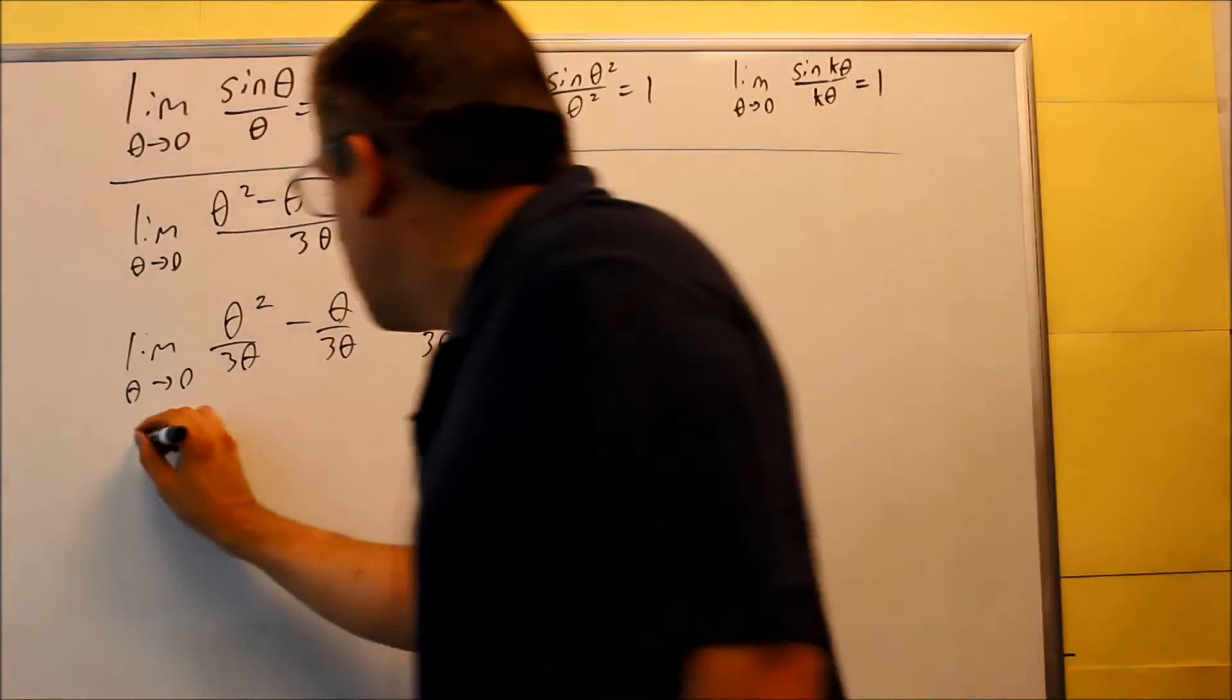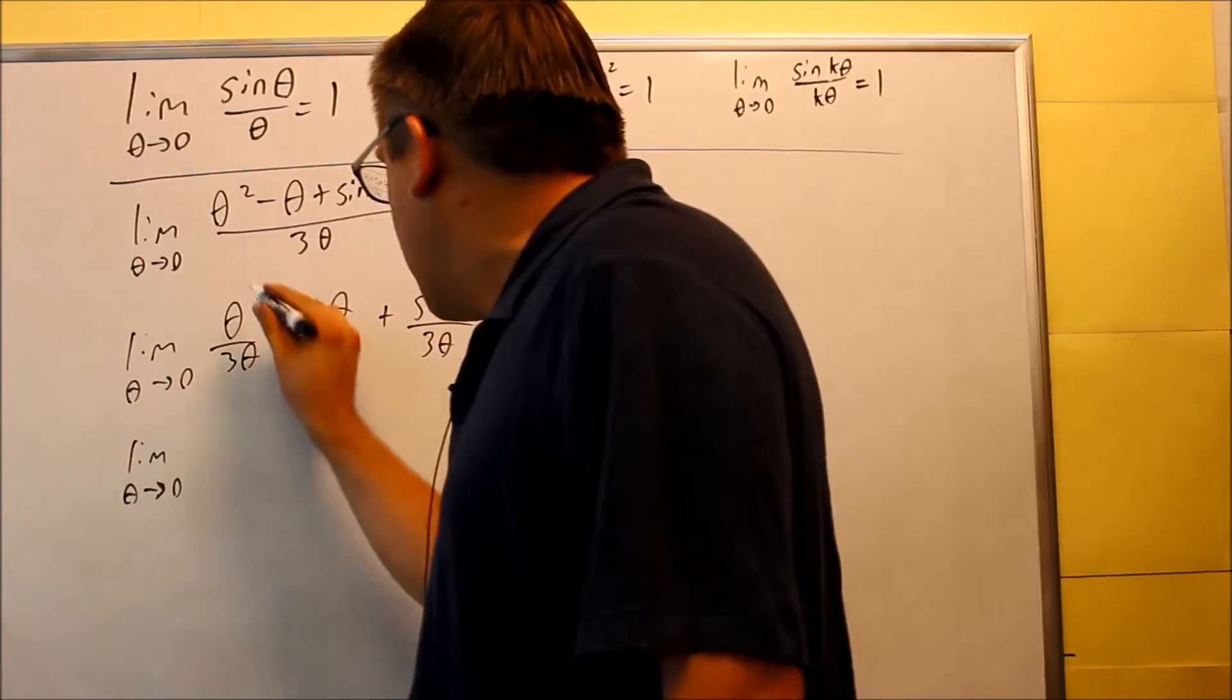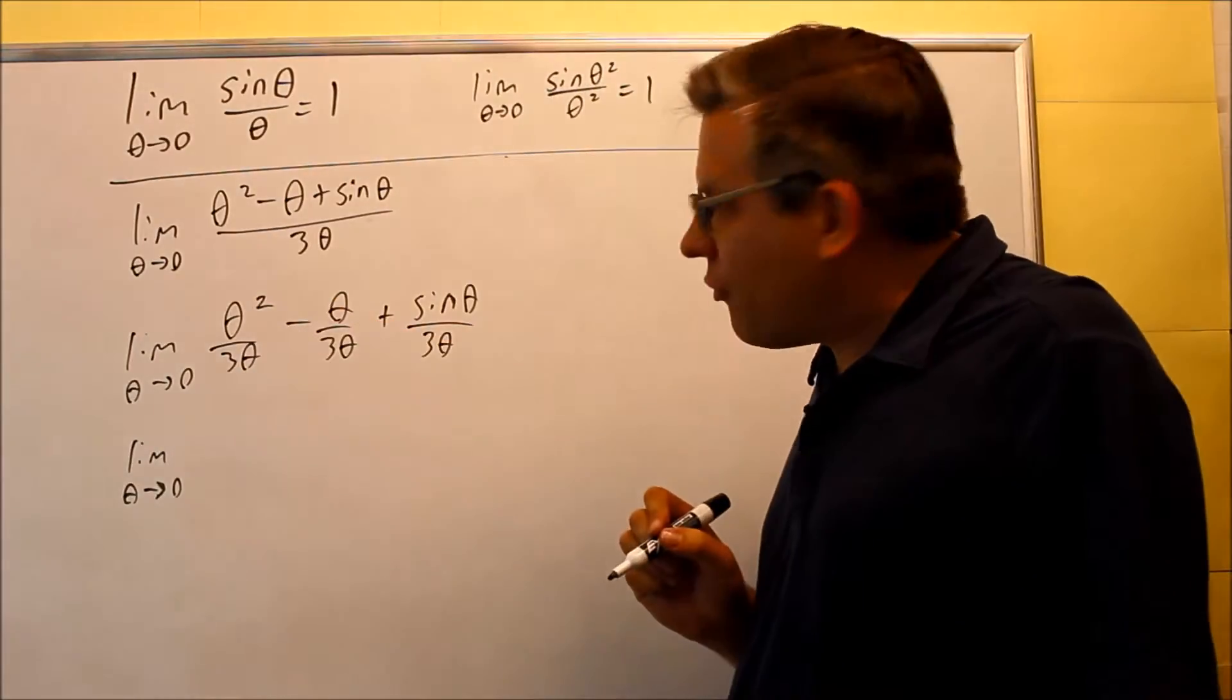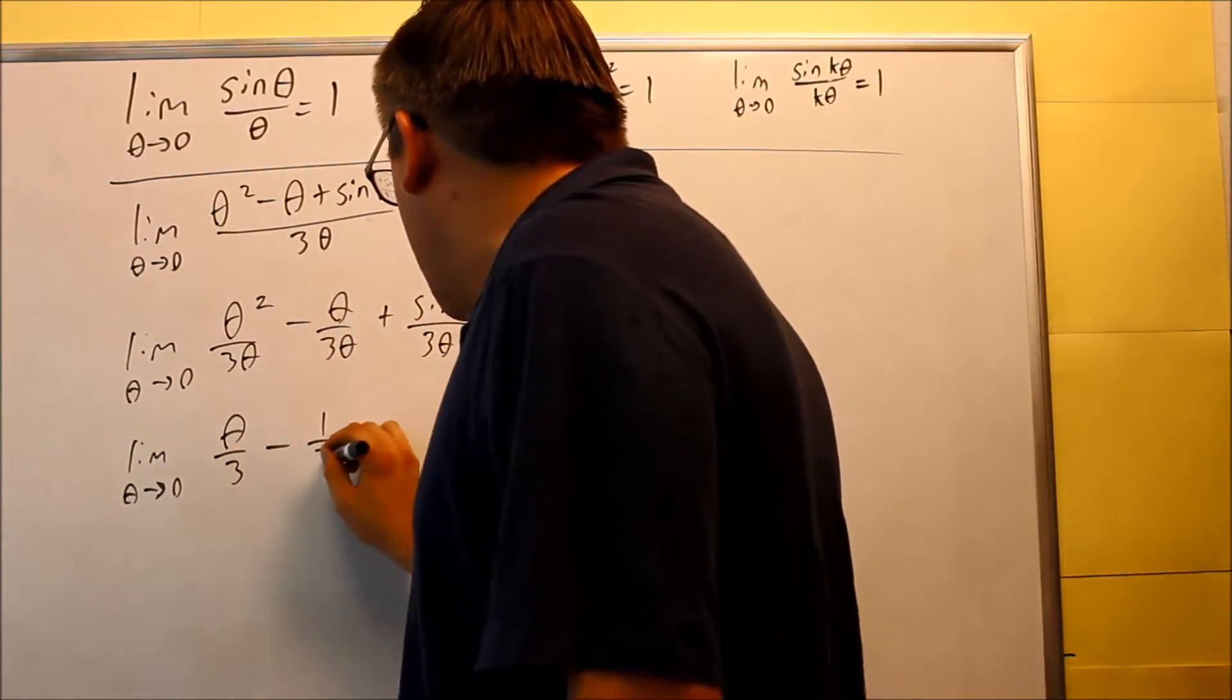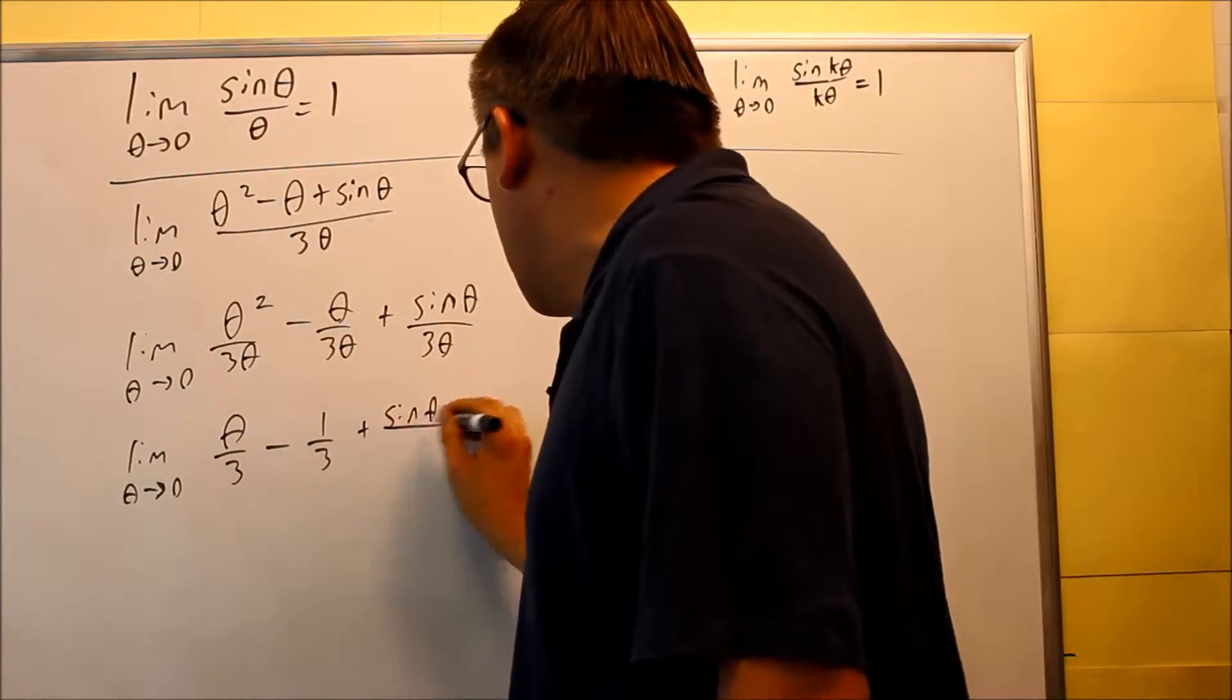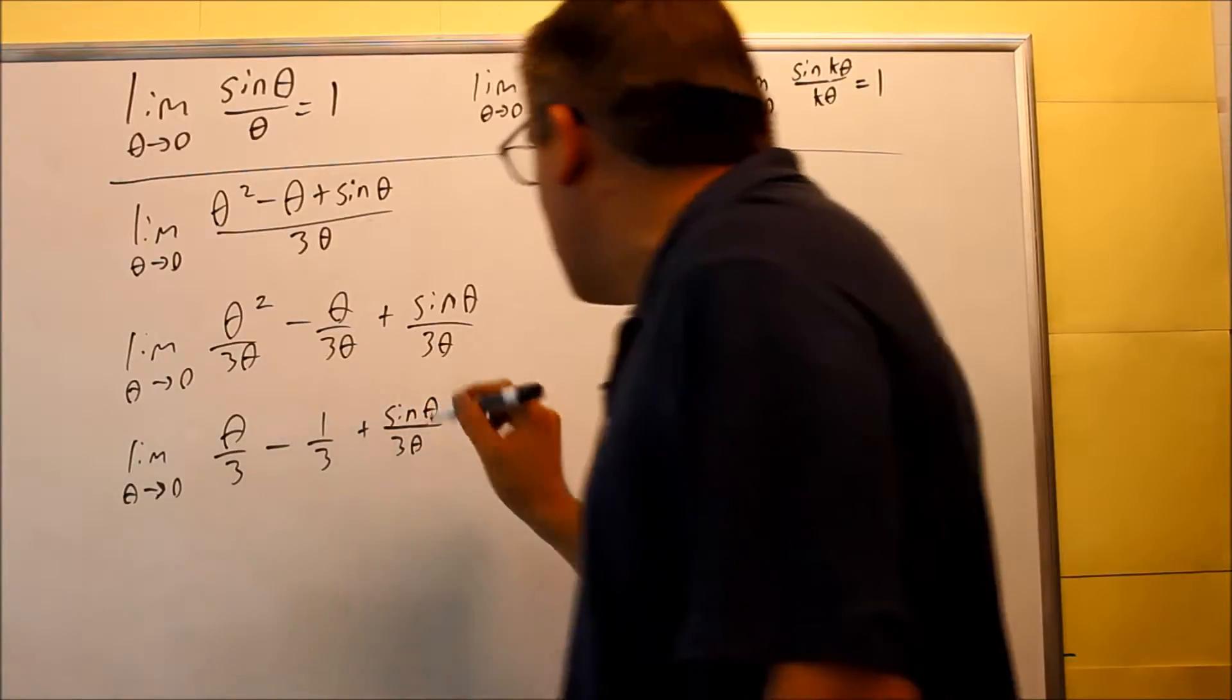Now if I simplify it, for this one, one theta will cancel out from the bottom and you're going to get theta over three. This one you're just going to get a one third and this other one over here we can't do anything with to cancel it. So we're just going to leave it as sine of theta over three theta.